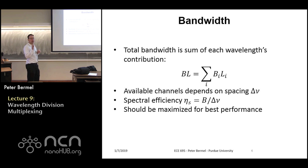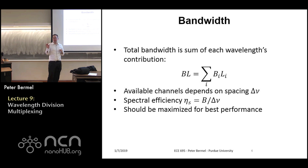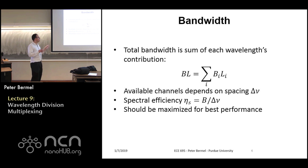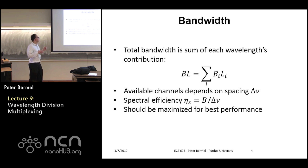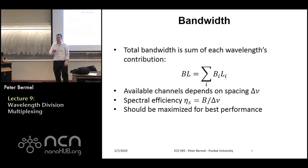The total bandwidth is really just the sum of the contributions from each individual channel. Typically each channel is fairly similar to the others in the communication wavelengths, and there's often some control bandwidth as well. The total number of channels available depends strongly on the spacing — the wider the spacing, the fewer channels you can fit into a given wavelength range. Another key measure of performance is spectral efficiency, which is the bandwidth or bit rate of each channel divided by the frequency spacing.